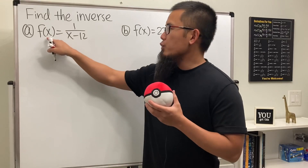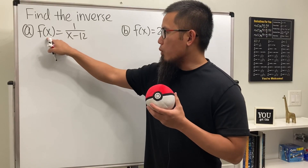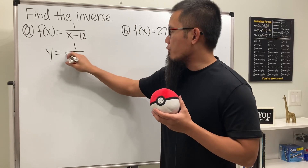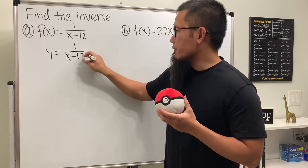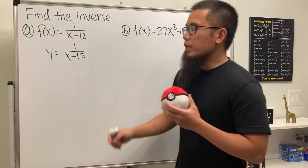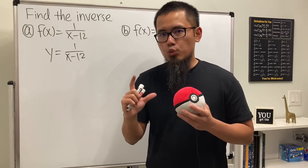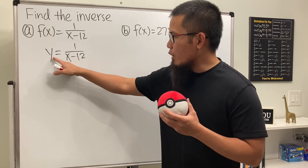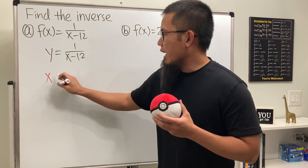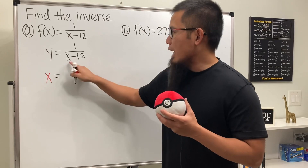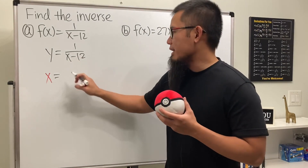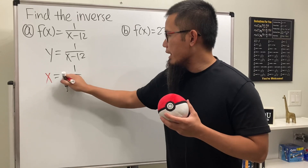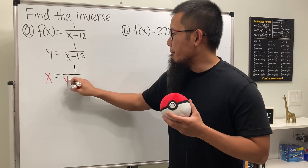Step one: you are going to write f of x as y, so we have y equals 1 over x minus 12. Step two: we are going to swap x and y. When you have y right here, it becomes x, and when we have x right here, it becomes y. So we have x equals 1 over y minus 12.